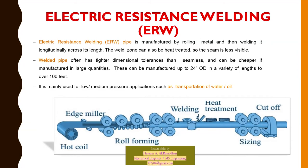Electric resistance welding (ERW) is manufactured by rolling metal and then welding it longitudinally along its length. The weld zone can be heat treated so the seam is less visible. Welded pipe often has tighter dimensional tolerance than seamless and can be cheaper if manufactured in large quantities. It can be manufactured up to 24-inch OD in lengths over 100 feet, and is mainly used for low to medium pressure applications such as transportation of water and oil.